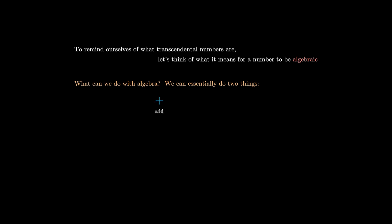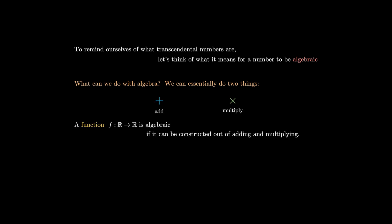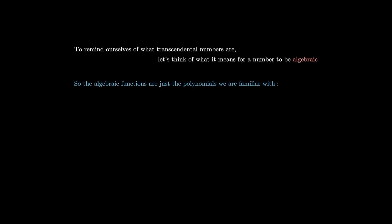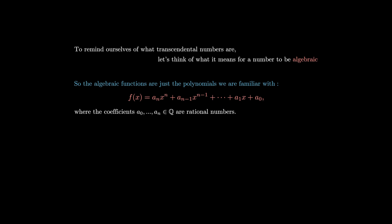What can we do with algebra? We can essentially do two things: we can add and we can multiply. A function is said to be algebraic if it can be constructed exactly out of addition and multiplication. For example, if I take a variable x, I can add a number to it — say x plus 3. This is a linear polynomial and is algebraic. We can then multiply by a number or the variable again: x times (x plus 3) gives x squared plus 3x. Multiplying further by 2x gives 2x cubed plus 6x squared. So algebraic functions are just the polynomials we're familiar with — linear combinations of powers of x with rational coefficients.